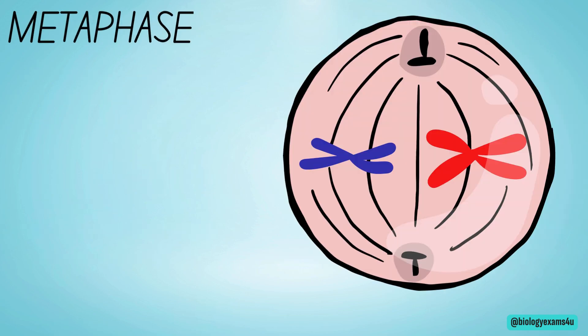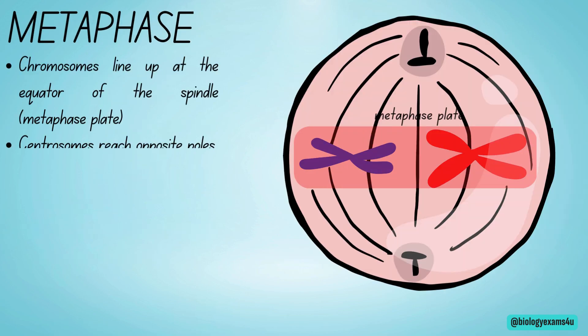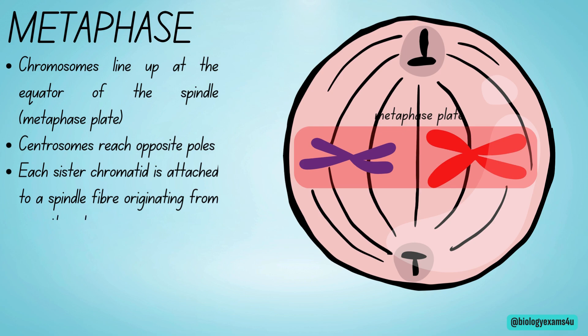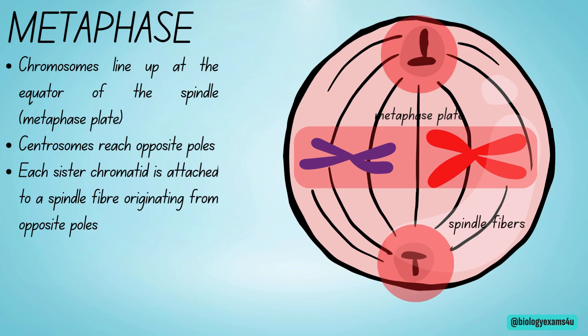At metaphase, chromosomes line up at the equator of the spindle, also known as the metaphase plate. Centromeres reach opposite poles, and spindle fibers attach to the centromere of each chromosome. Each sister chromatid is attached to a spindle fiber originating from opposite poles.